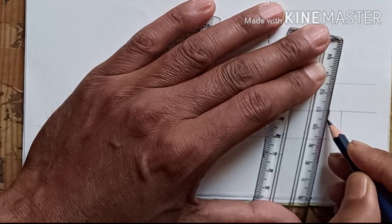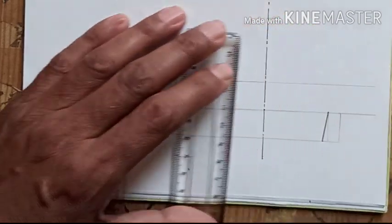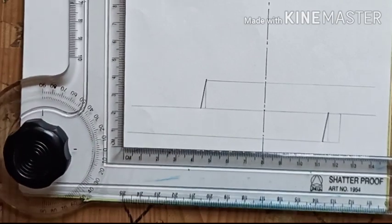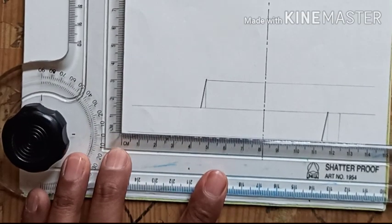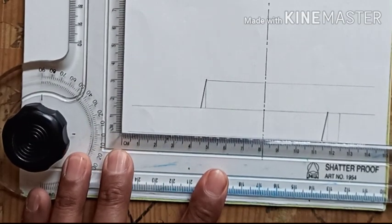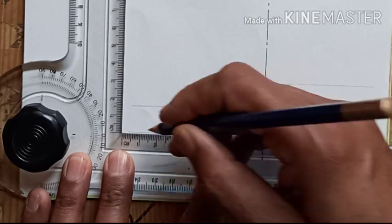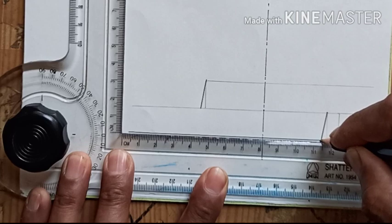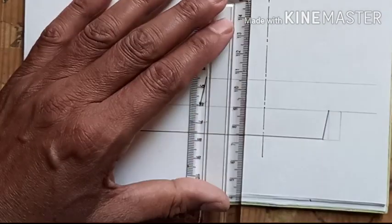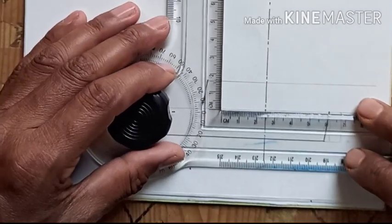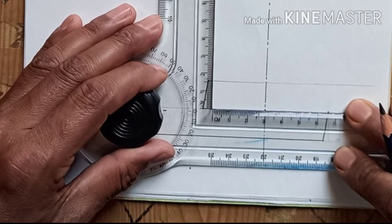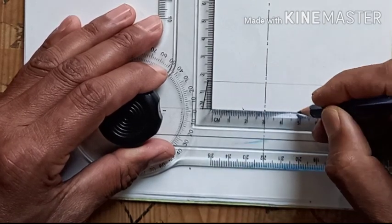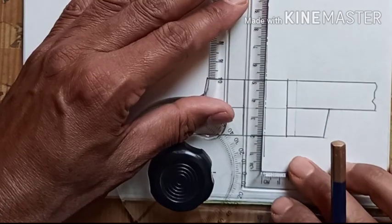Measure the angle and darken the line. Now we need to darken the lines already constructed. Keeping the scale at the middle of the rivet, we can mark the 12mm on each end.